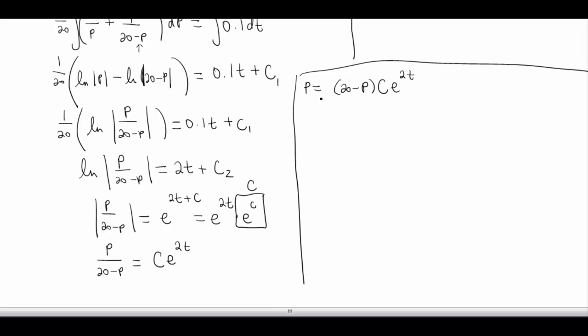I got the p by itself, but no I didn't, because I got a p in here too. Let's go ahead and distribute that c e to the 2t through. I'm going to end up with p equals 20c e to the 2t minus p c e to the 2t. I'm solving for p, so I better go ahead and swing this piece over and get all the p's on one side. So p plus p c e to the 2t equals 20c e to the 2t.